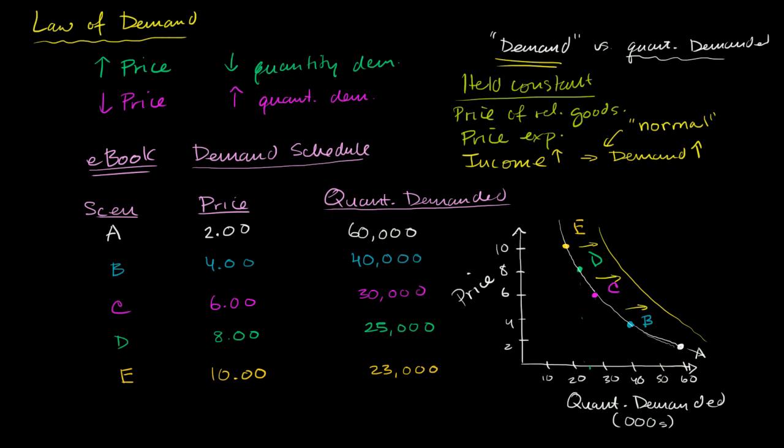Now, the other ones that are somewhat intuitive are population. Once again, if population goes up, obviously at any given price point, more people will want it. So it would shift the demand curve to the right, or it would increase demand. If population were to go down, it would decrease demand, which means shifting the whole curve to the left.